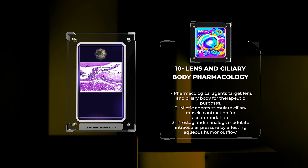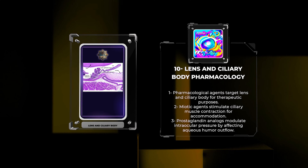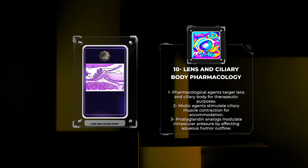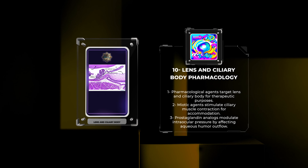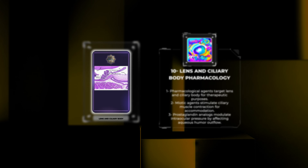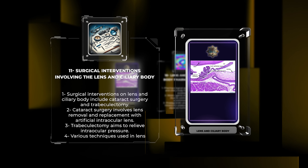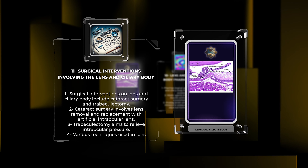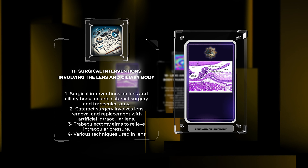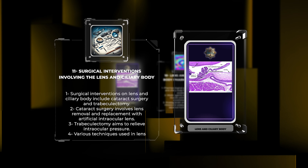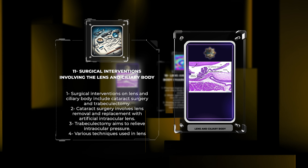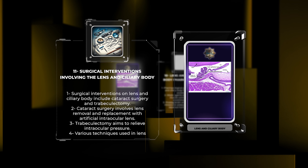The pars plana represents the anterior continuation of the ciliary body. The ciliary processes are responsible for the production and secretion of aqueous humor, a clear fluid that fills the anterior chamber of the eye. The epithelial cells lining the ciliary processes actively transport ions, water, and nutrients from the blood vessels into the posterior chamber, contributing to the production of aqueous humor. This fluid provides nourishment to the avascular lens and cornea, maintains intraocular pressure, and facilitates waste removal.